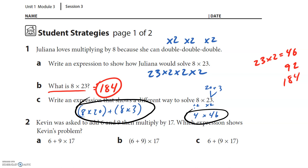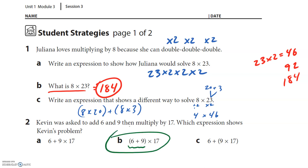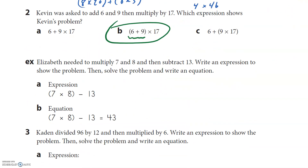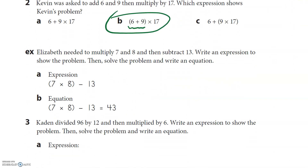Kevin was asked to add 6 and 9 and then multiply by 17. Which expression shows Kevin's problem? Since he's adding 6 and 9 first, the parentheses tell us that's happening first, so B is our answer. There's also an example on the next one: Elizabeth needs to multiply 7 and 8 and then subtract 13, so the expression — remember, no equal sign — is 7 times 8 minus 13.